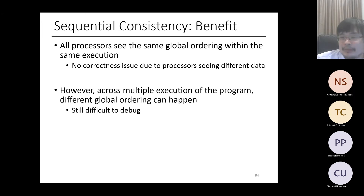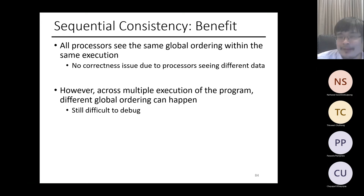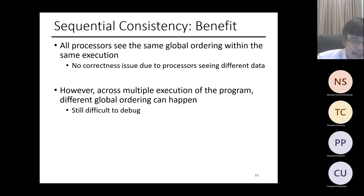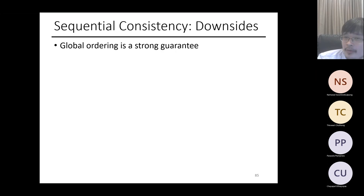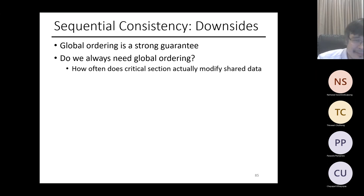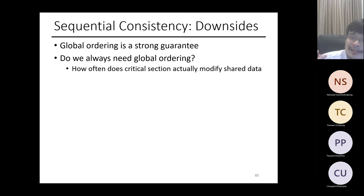The downside: when you run a program multiple times, different global orderings can happen, making it hard to debug. Also, sequential consistency is a strong guarantee that isn't always necessary. In many cases you don't need global ordering — the critical section only matters if someone actually modifies the data. If you only read data and never write, the order doesn't matter.